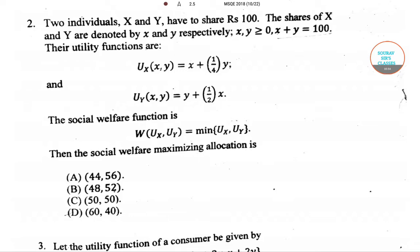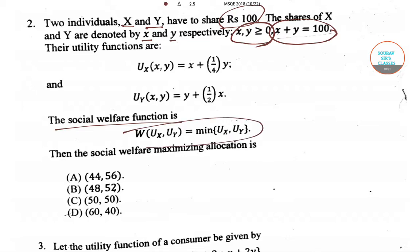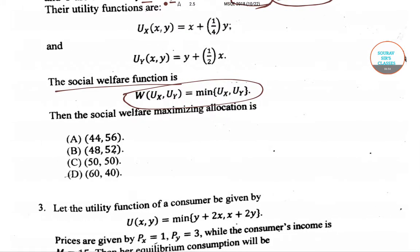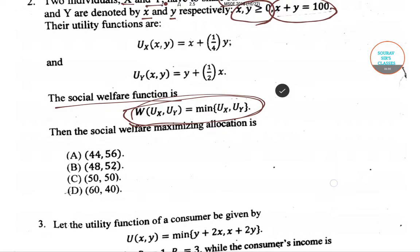Now let's concentrate on the second question. There are two individuals x and y who share rupees 100. Their shares are denoted by small x and small y respectively. The constraints are that x and y must be non-negative and x plus y equals 100. The utility functions are ux = x plus (1/4)y and uy = y plus (1/2)x. We are given a social welfare function which we need to maximize — social welfare is the welfare of both individuals as a whole.